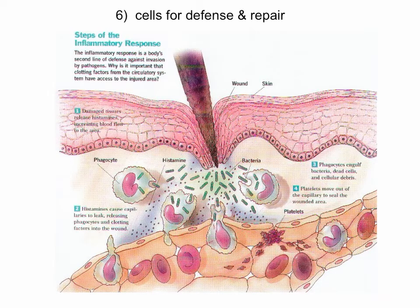There are also cells for defense and repair. You don't have to know all the names of the different types of white blood cells. Suffice it to say that white blood cells, platelets, and histamine — which is actually a chemical that's released — are all connective tissue components involved in defense and repair.